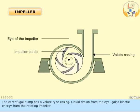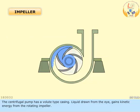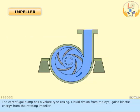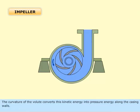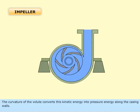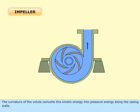The centrifugal pump has a volute type casing. Liquid drawn from the eye gains kinetic energy from the rotating impeller. The curvature of the volute converts this kinetic energy into pressure energy along the casing walls.